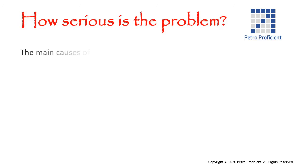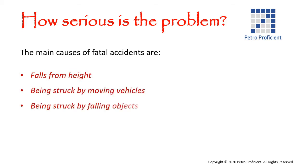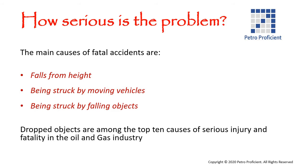The main causes of fatal accidents in the oil and gas industry are falls from height, being struck by moving vehicles, and being struck by falling objects. Dropped objects are among the top 10 causes of serious injury and fatality in the oil and gas industry.